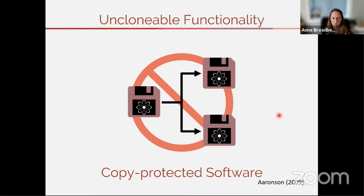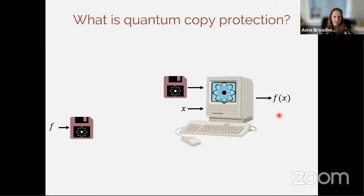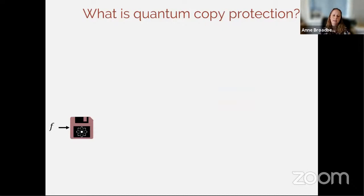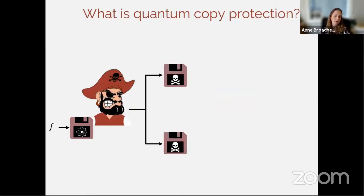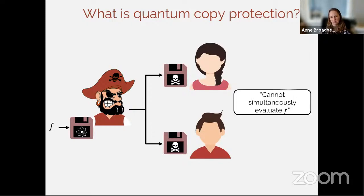Copy protection was proposed initially by Aaronson in 2009, and in the past year or two it's become much more involved with many more people working on it. What is copy protection? We have a function, encode it into a quantum piece of software, and we'll have an interpreter — a quantum computer — that takes the software, takes an input x, and produces f(x). A pirate tries to make pirated copies and distribute them to users, and we want to limit the possibility that users can simultaneously evaluate f.